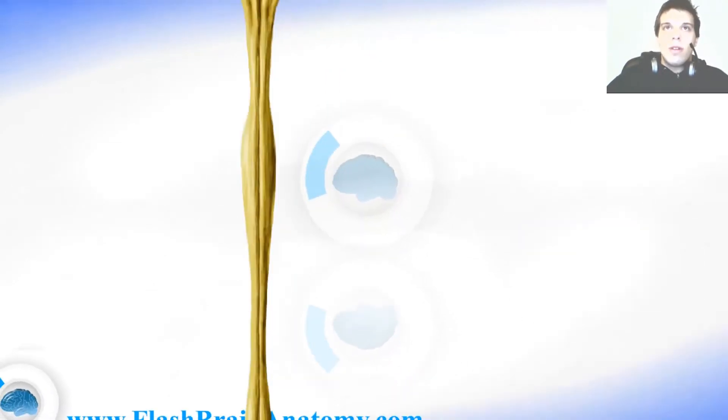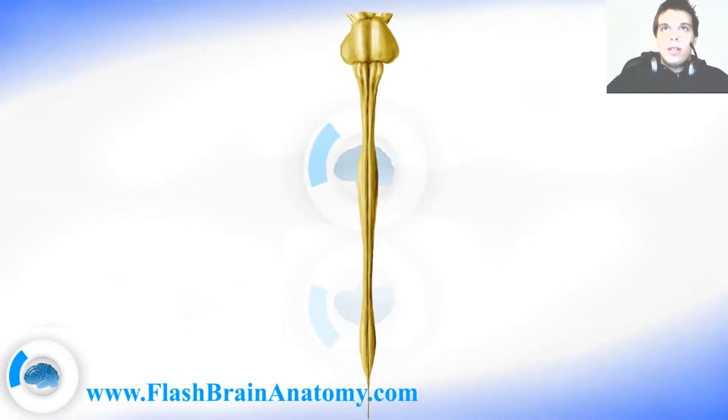Now let's look at the spinal cord in general. We said the decussation of the pyramids is the place where spinal cord begins. Then we had the cervical part with 8 segments, then the thoracic spine with 12 segments, and the lumbar spine with 5 segments, the sacral and the coccygeal part. The sacral spine also had 5 segments.